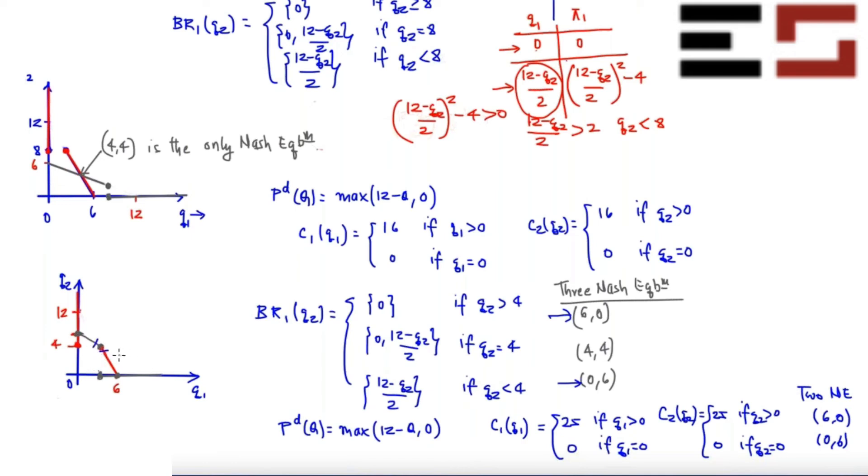And if it is going to fall short of (4,4), they'll never intersect at (4,4). And then the intersection will only happen at either this point or this point, which would mean that there'll be a natural monopoly situation. Is that clear?